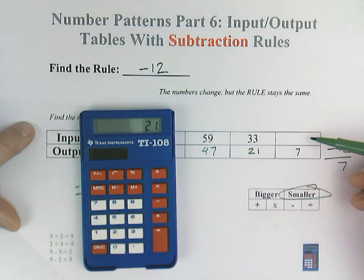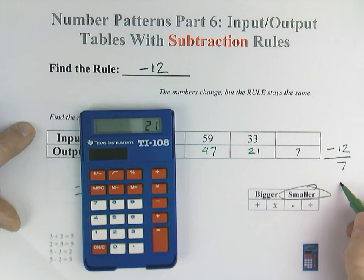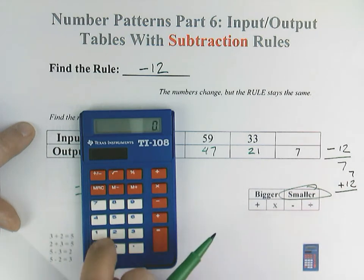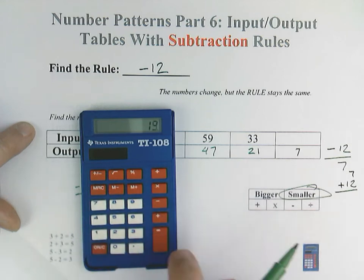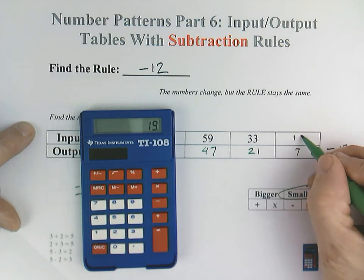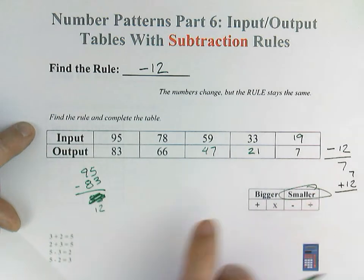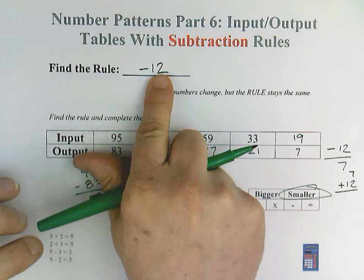But instead of working from top to bottom, now we're working from bottom to top. In other words, we're going opposite. Well, the opposite would be addition. So instead of subtract 12, we are going with a plus 12. In other words, 7 plus 12, 7 plus 12 would equal 19. And so we have completed this input output table with a rule of minus 12.